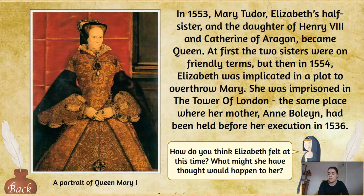In 1553, Mary Tudor — Elizabeth's half-sister and the daughter of Henry VIII and Catherine of Aragon — became queen. At first the two sisters were on good terms. However, in 1554, Elizabeth was implicated in a plot to overthrow Mary, and as a result Mary had her imprisoned in the Tower of London — the same place where her mother Anne Boleyn had been held before her execution in 1536. This became a significant challenge for Elizabeth and damaged their relationship as sisters.